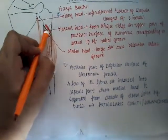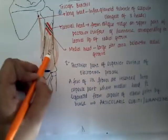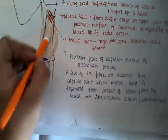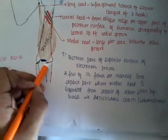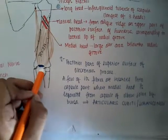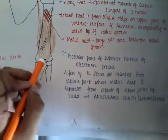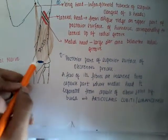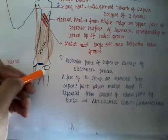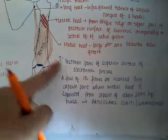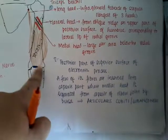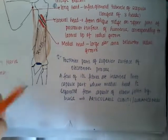Both the medial head and lateral head combine together to form the triceps muscle, and it gets inserted into the posterior part of the superior surface of the olecranon. Some fibers can get inserted into the capsular part of the humerus — those fibers which insert into the capsule are called articularis cubiti, or subanconeus.